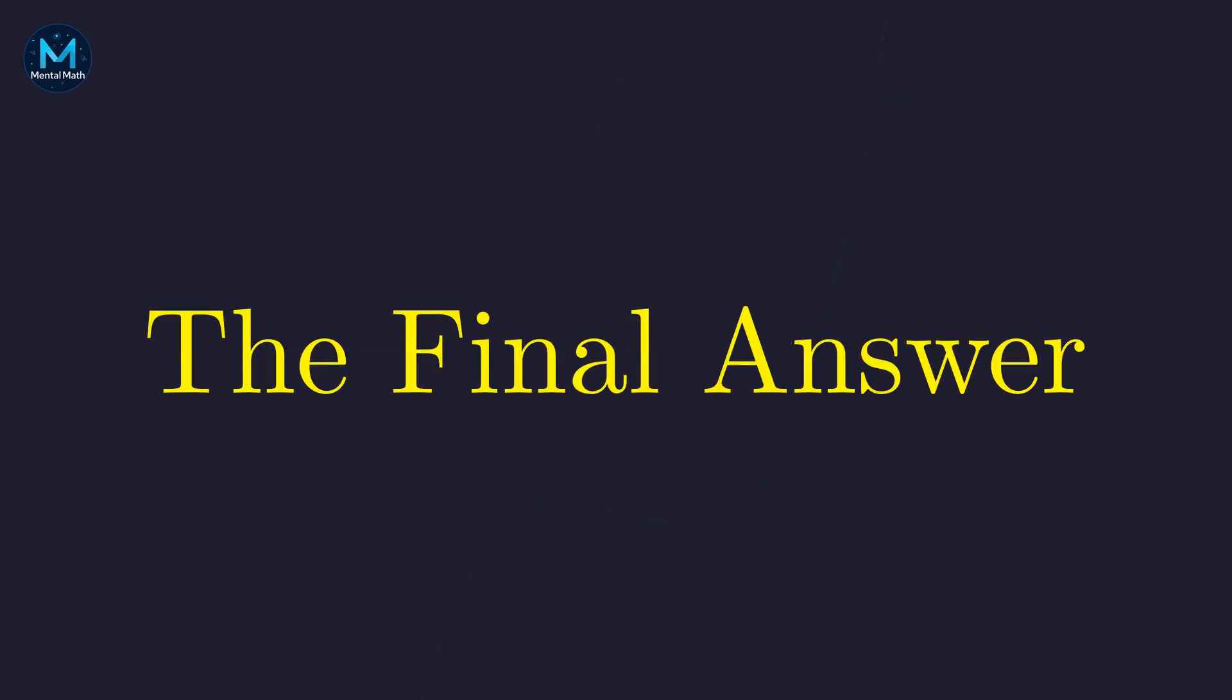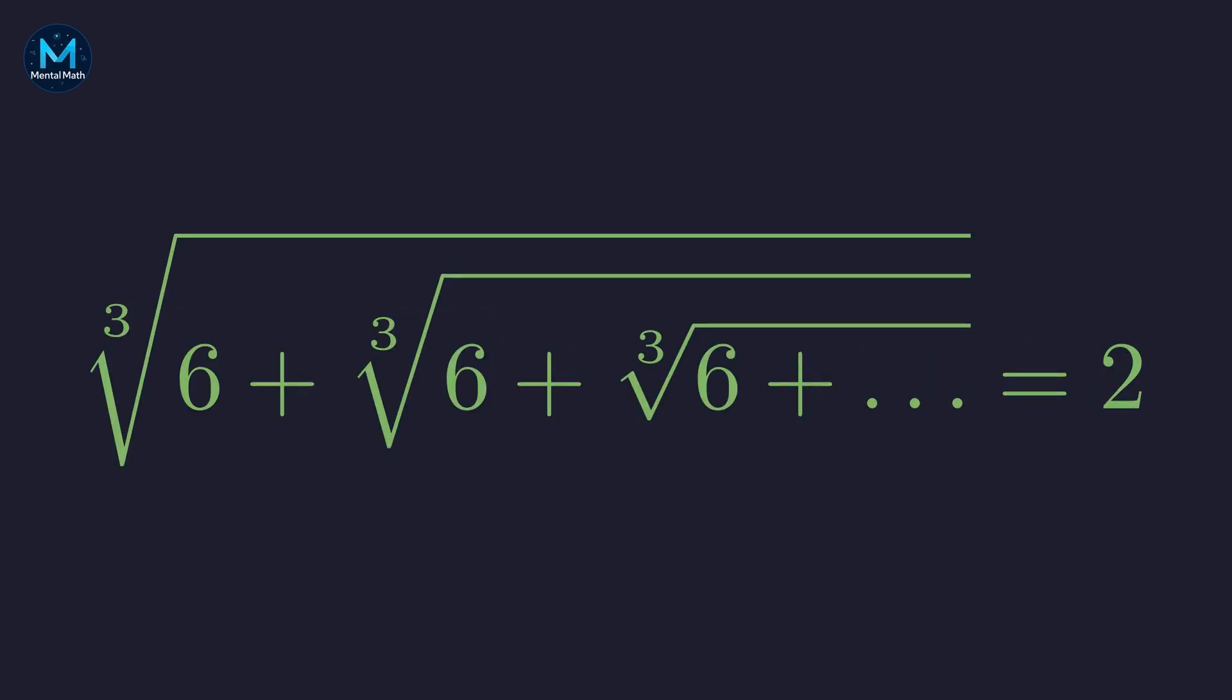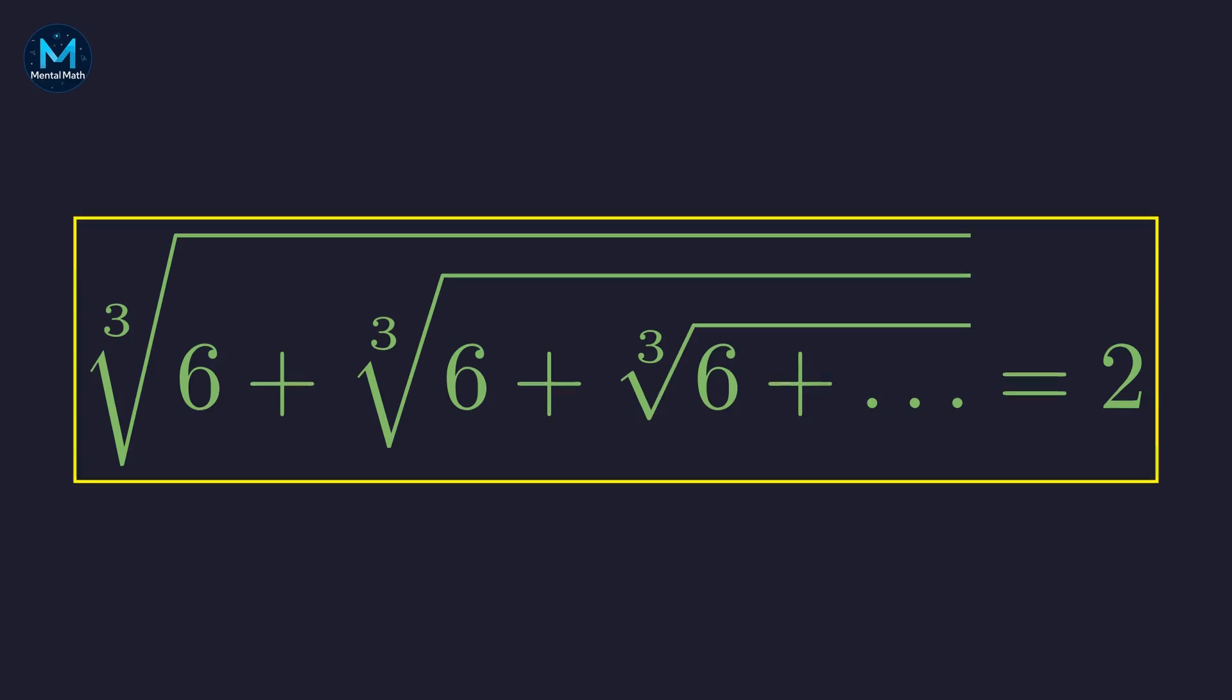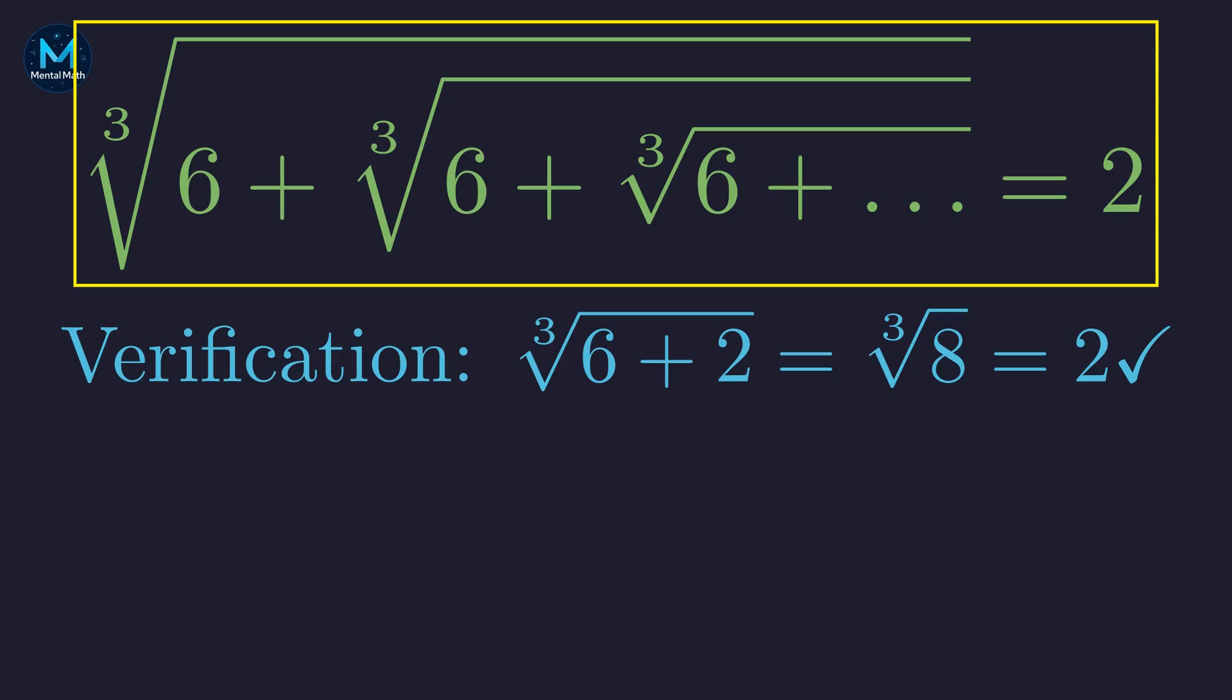So what's the value of this infinite nested radical? This entire infinite expression collapses to just 2. A beautifully simple answer. Let's verify: the cube root of 6 plus 2 equals the cube root of 8, which is indeed 2. Perfect!